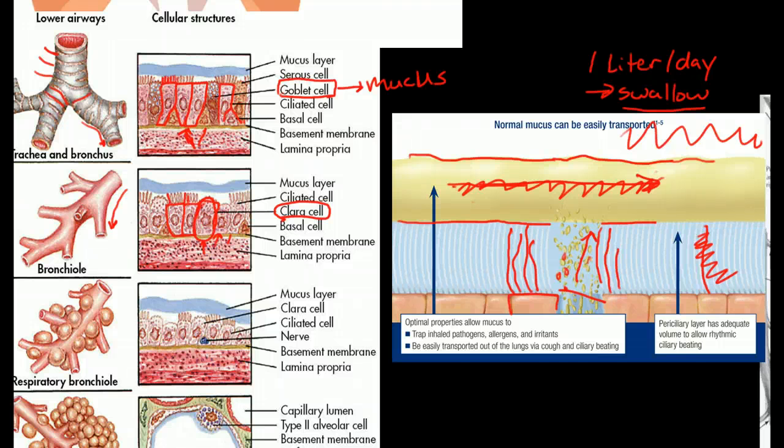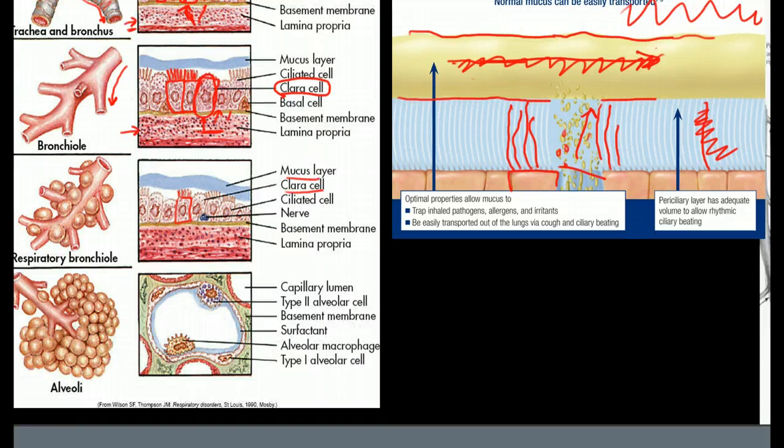They can either become another clara cell, or they can become a cuboidal epithelium, and they can generate the epithelial cells in the upper airway as well. The epithelial cells are terminally differentiated, so they can no longer divide, but the clara cells maintain the ability to divide and populate the rest of the epithelium. As we go down, you can see the cells become even shorter, more cuboidal shaped, and there are more clara cells and even fewer goblet cells.